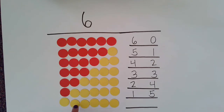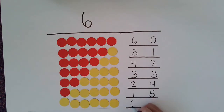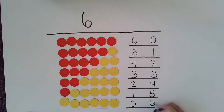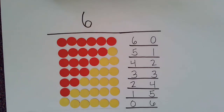Now I have one, two, three, four, five, six yellows and zero red. So I know that six and zero put together make six.